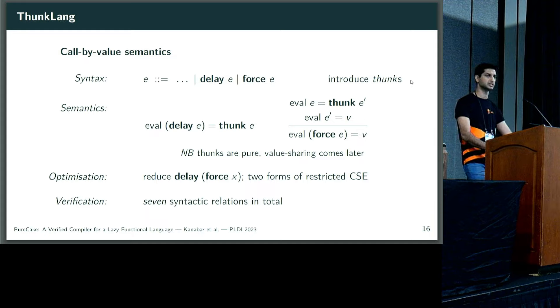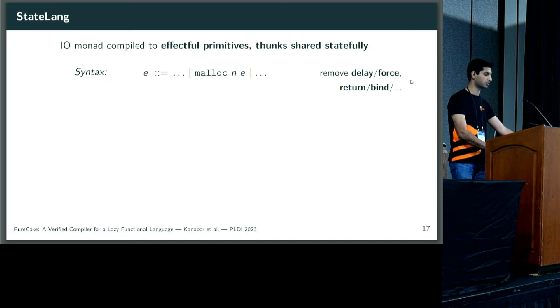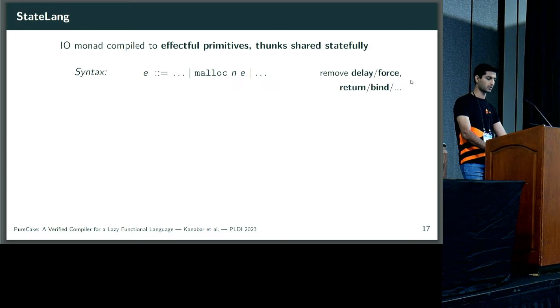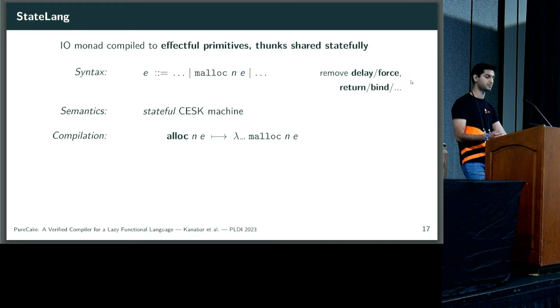In StateLang, the final intermediate language will do quite a bit. We're going to compile away the IOMonad to effectful primitives, and we're going to share thunk values using mutable arrays. So to StateLang syntax, we introduce primitive effects, and remove the thunk operations delay and force, and the monadic operations return, bind, and so on. Now that we've removed these monadic operations, we don't need this third layer of our semantics, the stateful interpretation. So we specify our semantics more directly as a CESK machine. When I say we compile away the IOMonad, what I mean is each monadic operation is converted to a suspended computation, which under the hood uses effectful primitives. When we apply this lambda to a unit that triggers its effects, its sequencing, its IO, in the correct order.